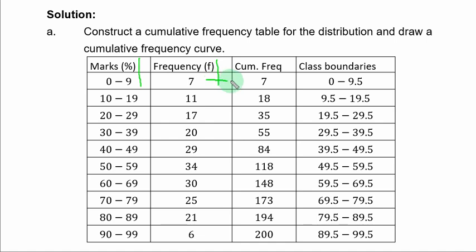Cumulative frequency is simply addition. You start with the first frequency 7, plus 11, you have 18, plus 17, you have 35, plus 20, you have 55, plus 29, you have 84, plus 34, you have 118, plus 30, you have 148, plus 25, 173, plus 21, 194, plus 6, you have 200.